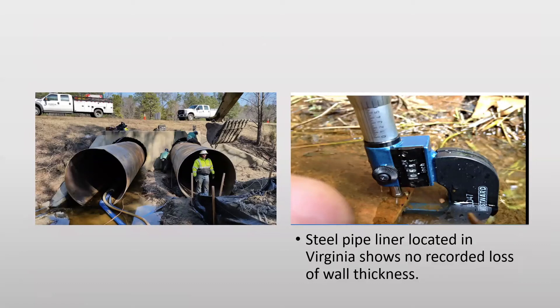These pictures show a steel pipe liner that was used to slip line two round culverts right outside Richmond, Virginia on I-295. Taking a closer look at the micrometer reading after 25-plus years of being in the ground and being exposed to water and other conditions, the pipe shows no recorded loss of wall thickness — the micrometer reading is still showing at 0.589 inches.